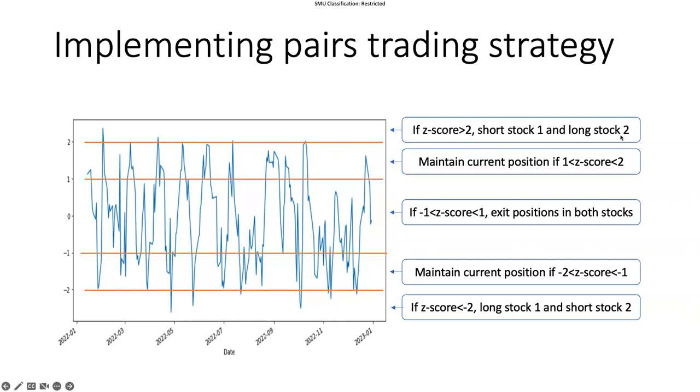Vice versa, we run the long position for stock two. This works similarly for the negative scenario. If it's negative two, then we long stock one and short stock two. However, when the relationship goes back to a relatively normal range, which could be one in this case - if the z-score is between negative one and one - we exit the position in both stocks. This serves as a protection measure, because if the stock price moves very fast against our position, we need to exit before it hurts us. So it serves as a stop loss or profit locking protection measure.